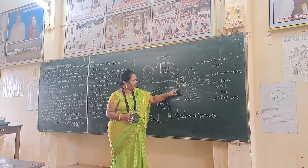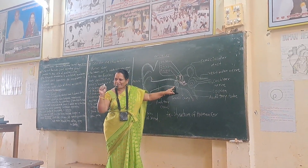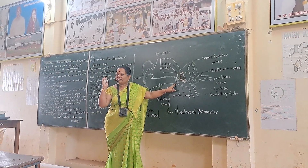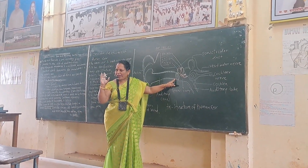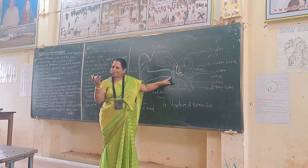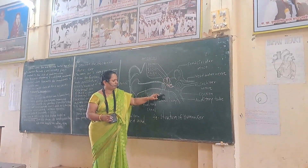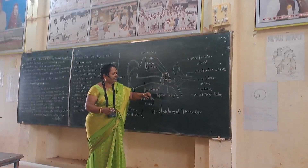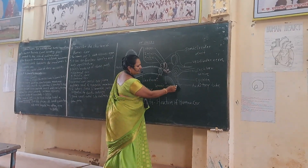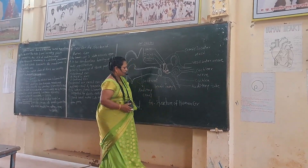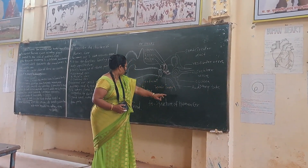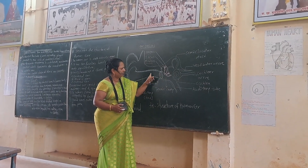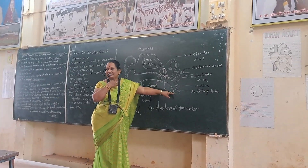The auditory canal leads to the ear drum, which plays an important role. Damage to the ear drum can cause harm. Beyond the ear drum is the tympanic cavity, and that tympanic cavity continues as the Eustachian tube, which connects the middle ear to the pharynx.